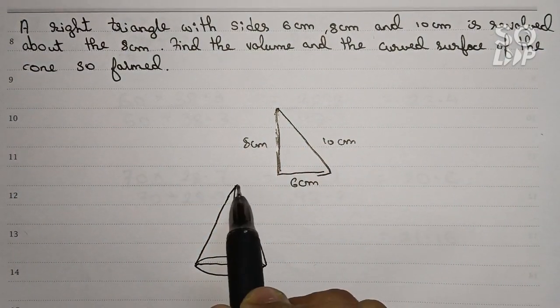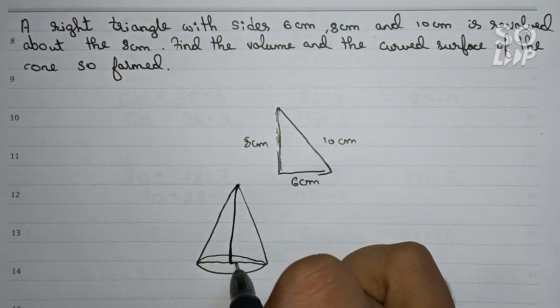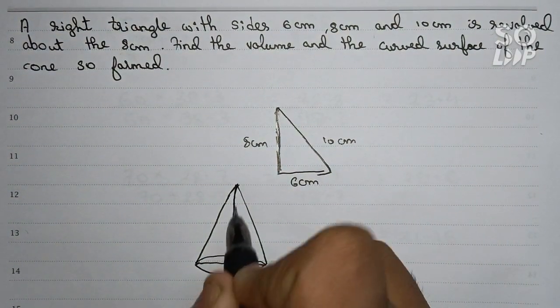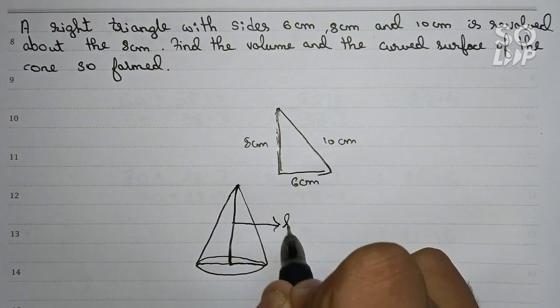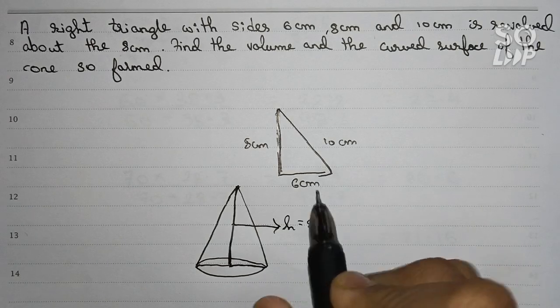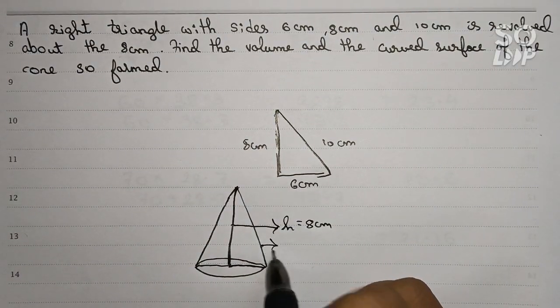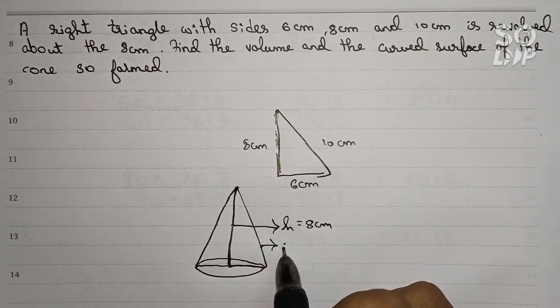If we take this triangle, the height will be - that means this length will be close to 8 centimeter, and this will be the slant height, taken as l, it will be 10 centimeter.